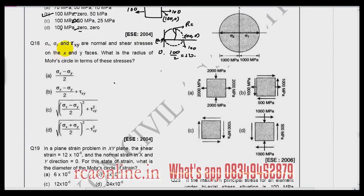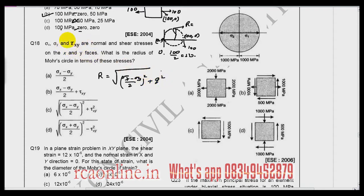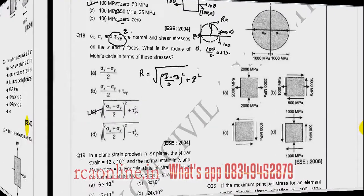Question 18: sigma x, sigma y and tau xy are normal and shear stresses on xy faces. What is the radius of the Mohr circle? As discussed in question 16, the radius R equals the square root of (sigma x minus sigma y by 2) squared plus Q squared, where Q is tau xy. So the radius is the square root of (sigma x minus sigma y by 2) squared plus tau xy squared. C is the right answer.